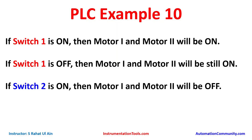If switch 1 is on, then motor 1 and motor 2 will be on. If switch 1 is off, then motor 1 and motor 2 will still be on. If switch 2 is on, then motor 1 and motor 2 will be off. For switch 1 and switch 2 we use normally open contacts, and for the motors we will use set and reset coils.